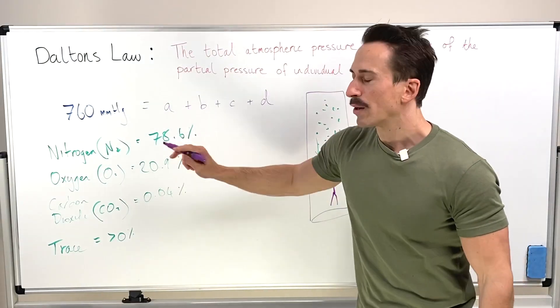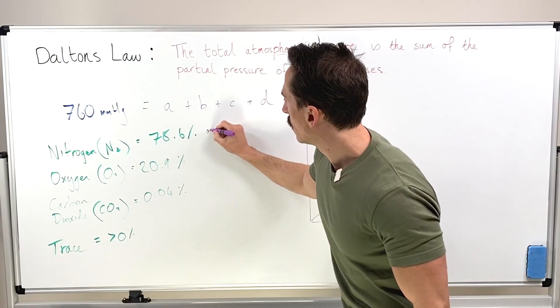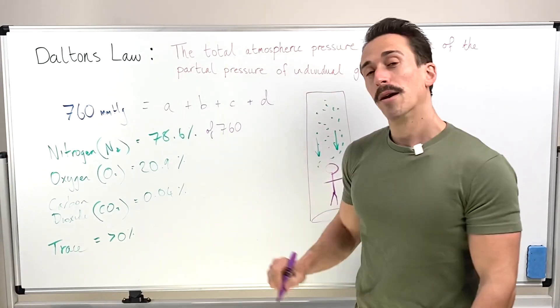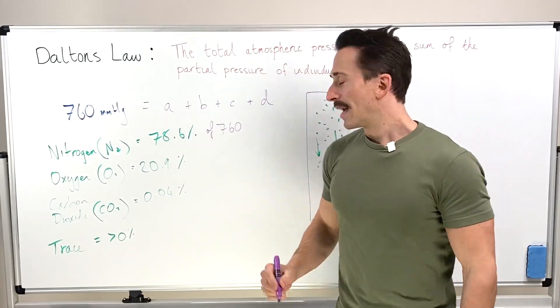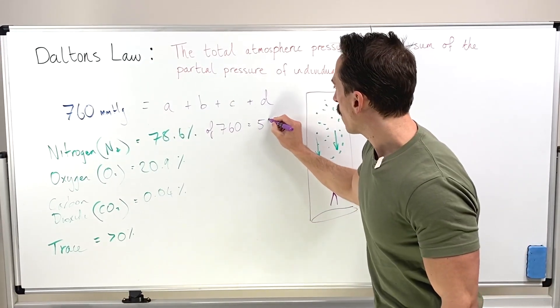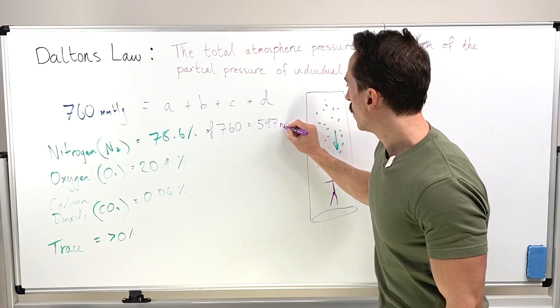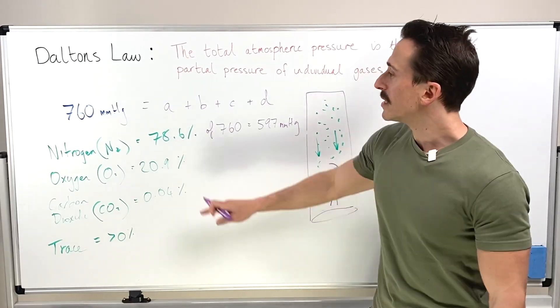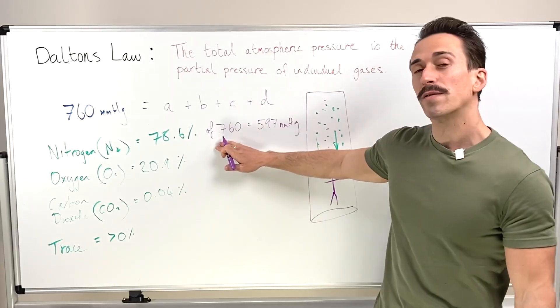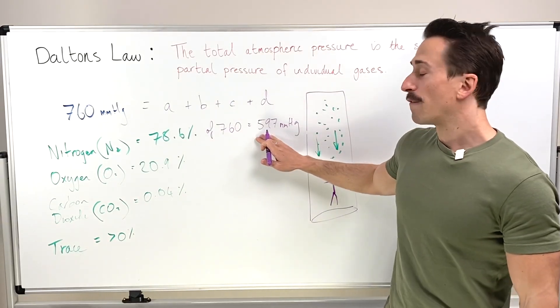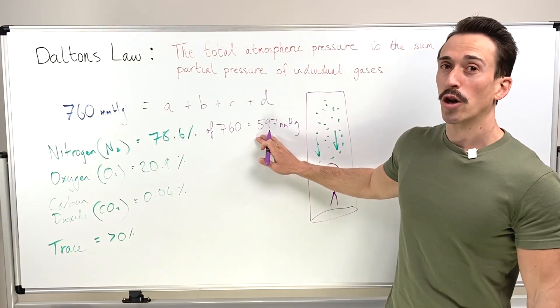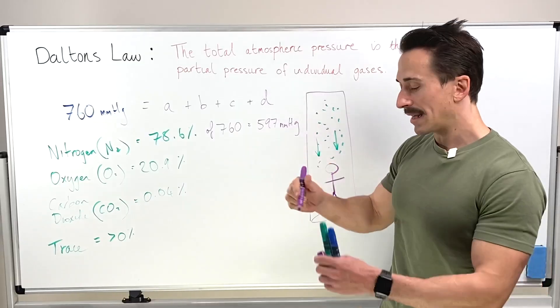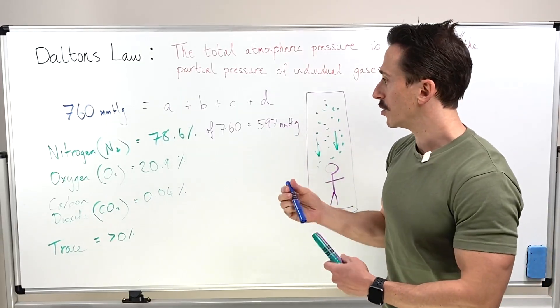78.6% of 760 millimeters of mercury is actually equal to 597 millimeters of mercury. So you can see 78.6% of the total atmospheric pressure is 597, and that's nitrogen. We refer to this as the partial pressure of nitrogen.